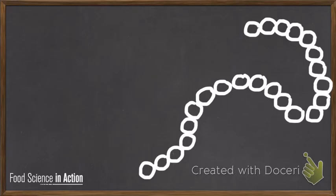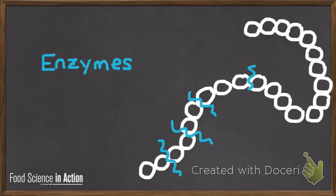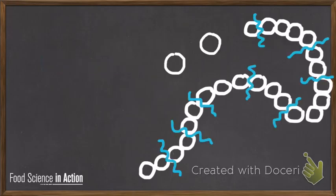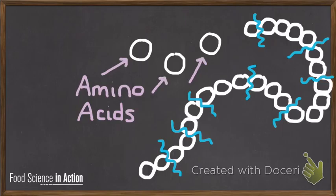Once inside your digestive tract, other proteins, called enzymes, break the bonds between the individual amino acids and proteins. This turns the large proteins back into amino acids.